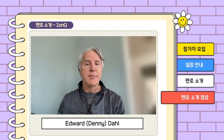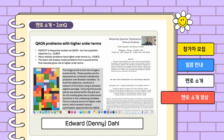The first problem that I would like to mentor a team on is called QAOA problems with higher order terms. QAOA has been studied a lot in the context of max-cut problems. Max-cut problems are quadratic — in other words, when you write down the Hamiltonian for a max-cut problem, you have a combination of linear and quadratic terms.